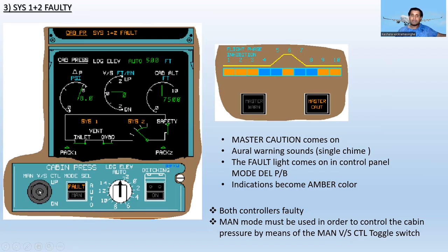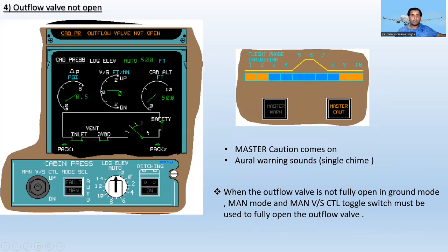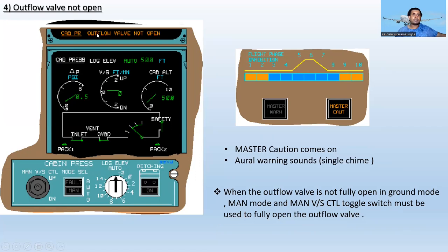The next warning is Outflow Valve Not Open. The master caution comes on and the oral warning sounds as a single chime. When the outflow valve is not fully open in ground mode, manual mode must be selected and the manual vertical speed control toggle switch must be used to fully open the outflow valve. The fault message is 'Cabin Pressure Outflow Valve Not Open.'